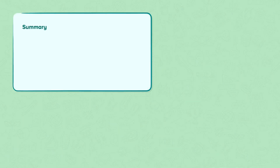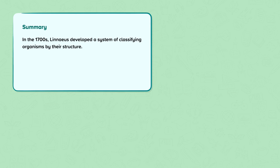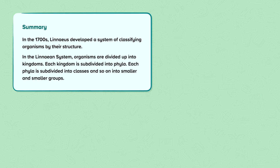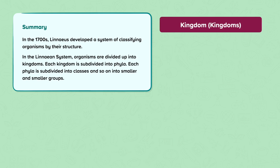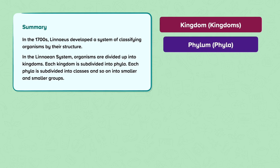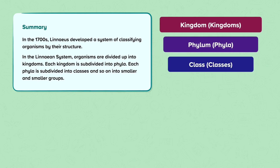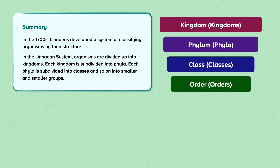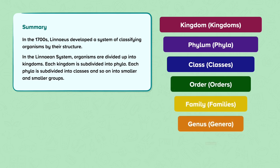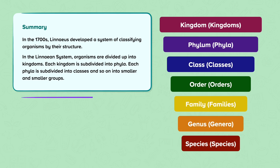To summarise: in the 1700s, Linnaeus developed a system of classifying organisms by their structure. In the Linnaean system, organisms are divided up into kingdoms. Each kingdom is subdivided into phyla, each phyla is subdivided into classes, and so on into smaller and smaller groups.